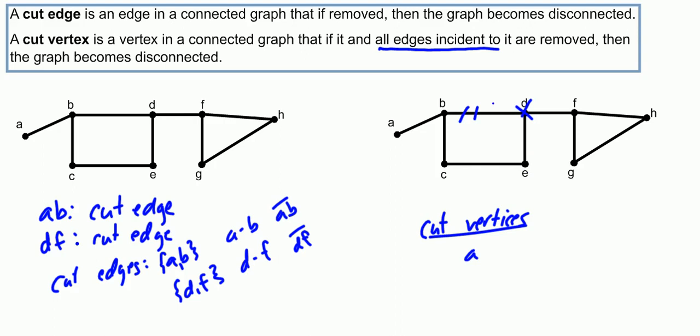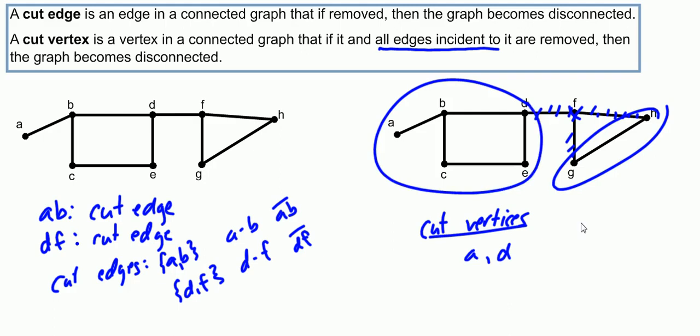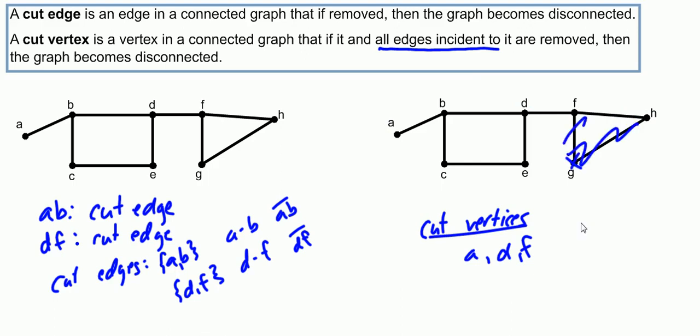But if we take D down, then we have a problem. We have a sub graph over here, and a sub graph over here, that will no longer be able to communicate to each other. So D is going to get added to our list of cut vertices. F as well. If F goes down, now you have the GH and the ABCDE sub graphs that are no longer able to communicate. But if G goes down, no problems. And similarly, if H goes down, no problems.